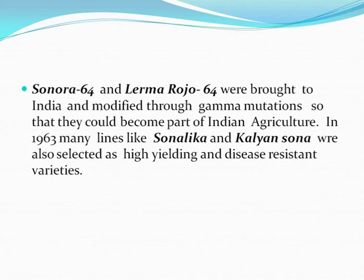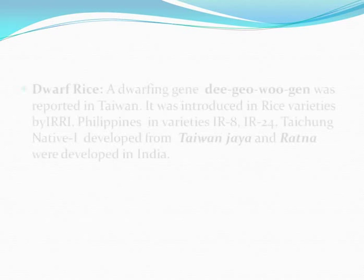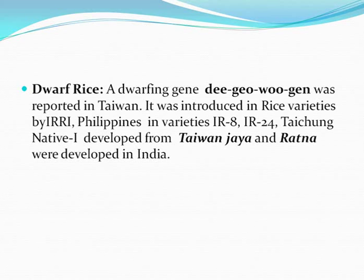In 1963, many lines like Sonalika and Kalyan Sona were selected as high-yielding and disease-resistant varieties. Dwarf rice: a dwarfing gene, Dee-geo-woo-gen, was reported in Taiwan. It was introduced in rice varieties by IRRI Philippines in varieties IR8 and IR24. Taichung Native 1 was developed from Taiwan; Jaya and Ratna were developed in India.